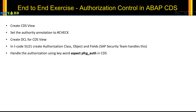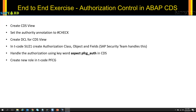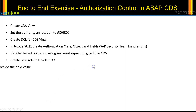Then we will go to transaction PFCG and create a new role for ourselves. Again, this is the activity of the SAP security team or the admin team — ABAPers or functionals need not worry about it — but in this training I am showing you what happens behind the scenes. After that, we will add the profile and then decide what field will have what values, so that's how we control it.